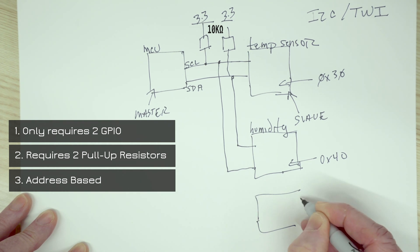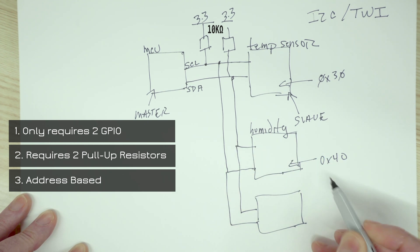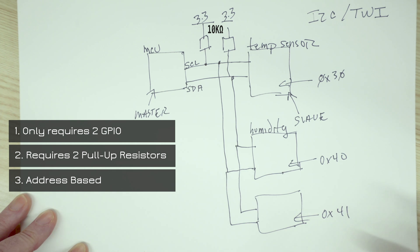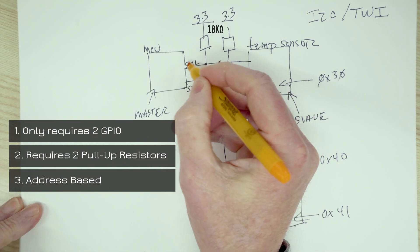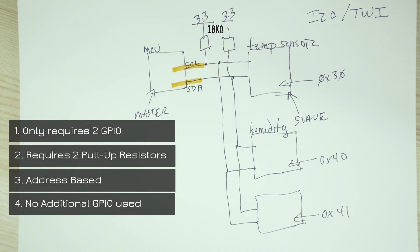And, of course, we can just continue to add more devices like this. And as long as we don't have multiple addresses that collide, we are golden. So the key thing to remember here is that as we add sensors, we only still have two lines or two pins used on the microcontroller, which is huge.